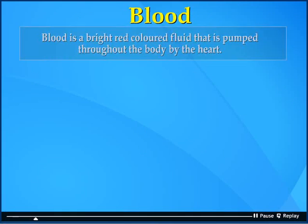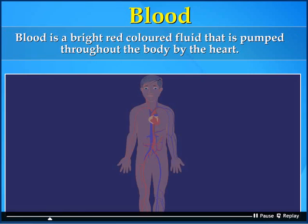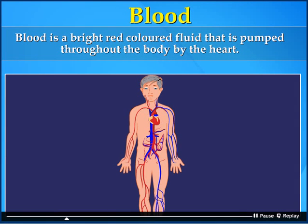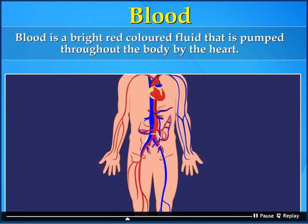Blood. Blood contains plasma, blood cells — red blood cells and white blood cells — and platelets.